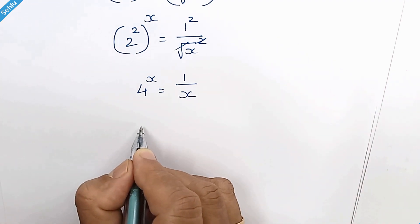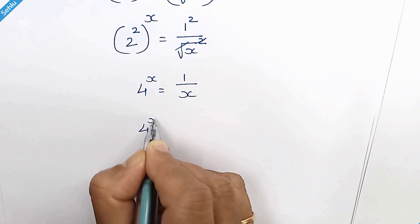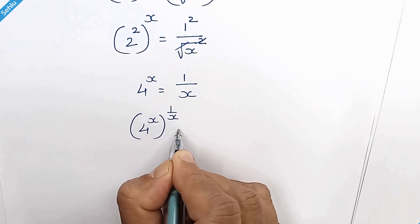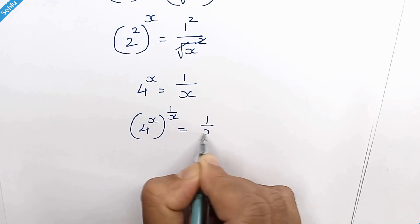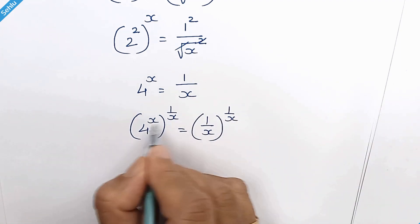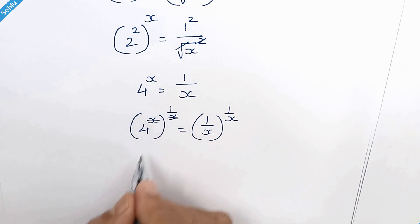Now in the next step we will raise 1 over x both the sides. We can multiply these 2, so these 2 get cancelled out. And 4 is 2 square.